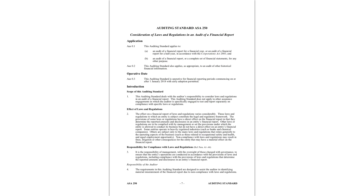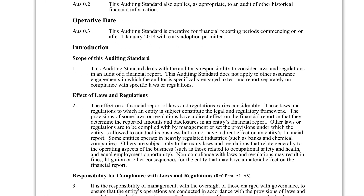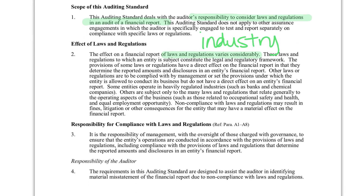We still use the same terms and all of the same information. Looking at the scope — the scope explains what our standard is about — it's my responsibility as the auditor to consider laws and regulations. It doesn't apply to other assurance, but remember that laws and regulations vary a lot, so we have to specifically look at the laws related to these particular companies. That's why it's really important in a lot of audit firms that you understand your industry, because a lot of laws and regulations are industry specific.